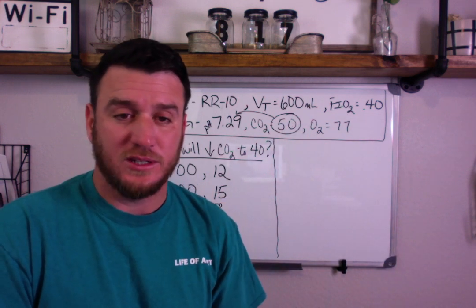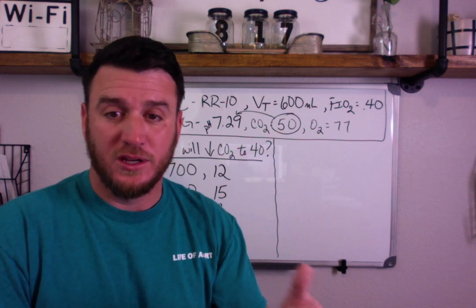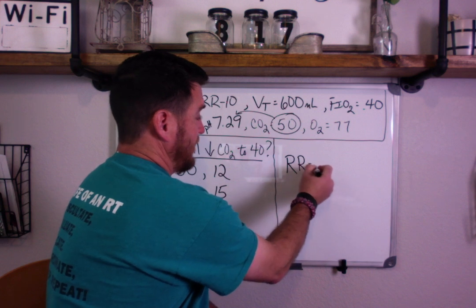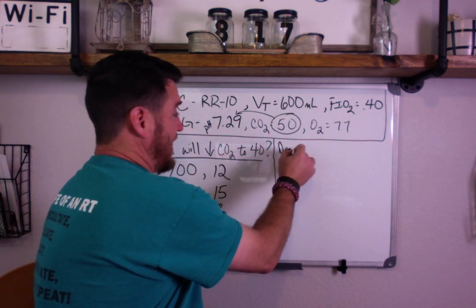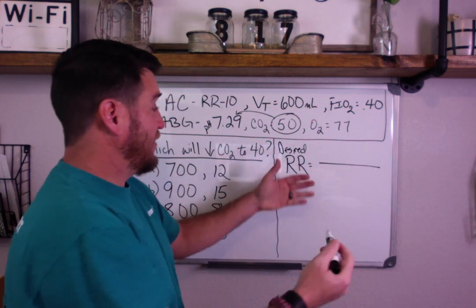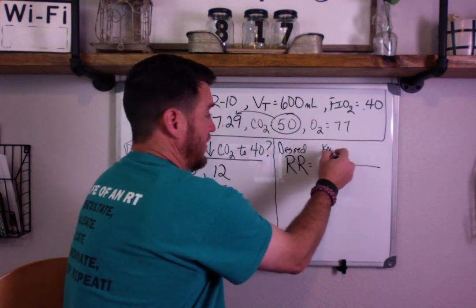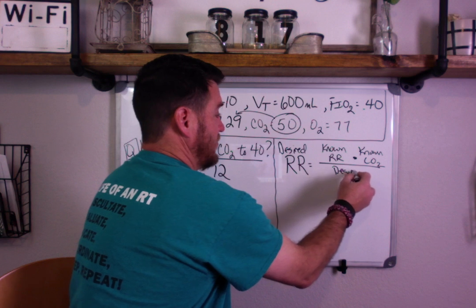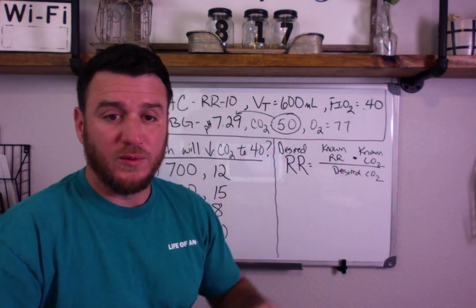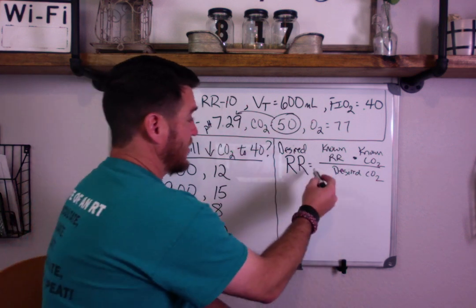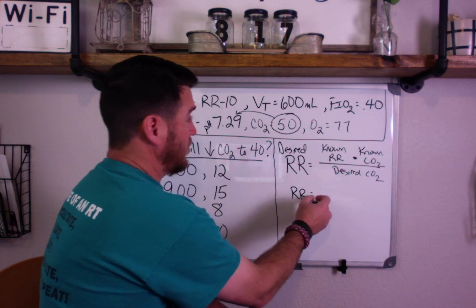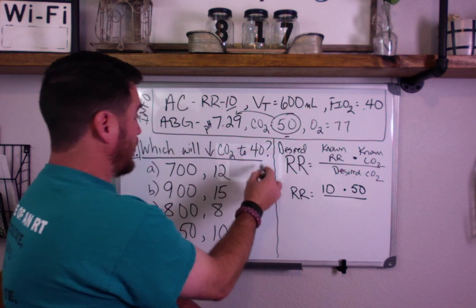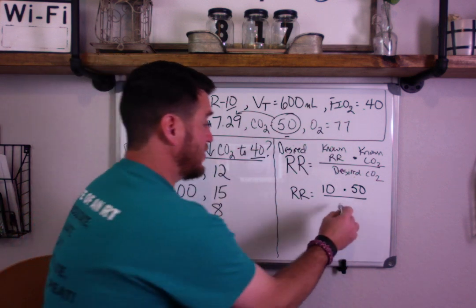If you only remember one version of the formula, you're going to find yourself in trouble. For example, let's solve for desired respiratory rate. The formula is: Desired RR = Known RR × Known CO2 ÷ Desired CO2. So: Desired RR = 10 × 50 ÷ 40.